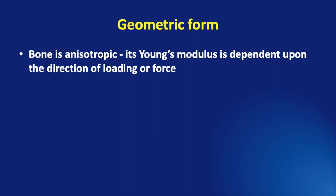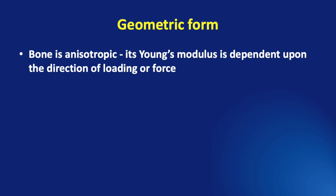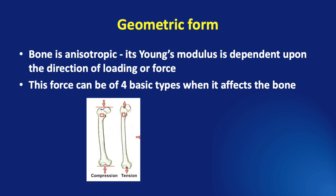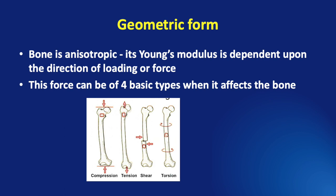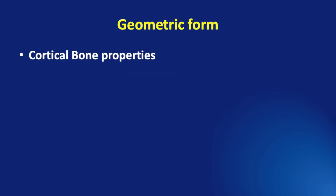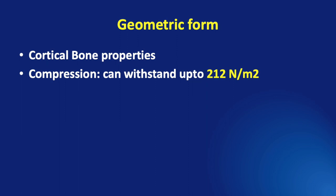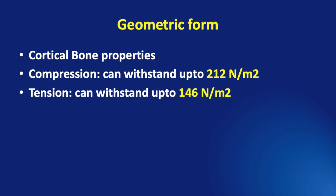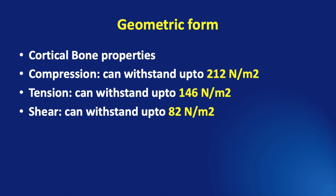The first thing we need to know is that bone is anisotropic — that is, its Young's modulus is dependent upon the direction of the loading or the force. This means that the strength of the bone will be different in different directions of application of the force. This force can be of four basic types when it affects the bone: compression force, tension force, shear force, and torsion. When we consider cortical bone alone, it can withstand compression up to 212 N/mm², tension up to 146 N/mm², and shear only up to 82 N/mm². So bone is weakest in shear, then tension, then compression.